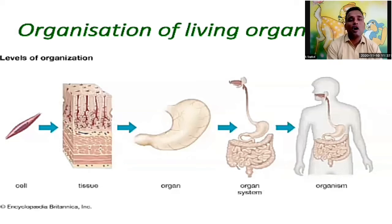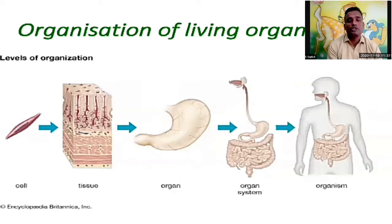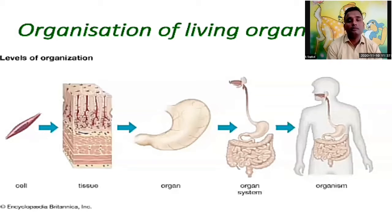So these are the organizations of living organisms. Many cells come together to form a tissue. The group of tissues forms an organ. A number of organs form the organ system, and many organ systems working together form the organism. These are the structures of our body, but the cell is such a minor thing that we cannot see it with the naked eye.